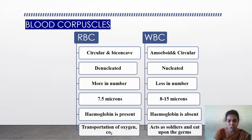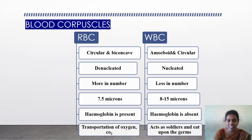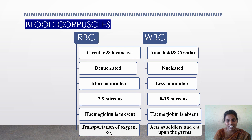The function of WBC is to protect our body from diseases — they act as soldiers and destroy germs. Regarding lifespan: RBC live for nearly 115 to 120 days, after which many are destroyed in the liver and spleen, and new RBC are produced in the bone marrow of long bones. The lifespan of WBC is maximum 14 days.